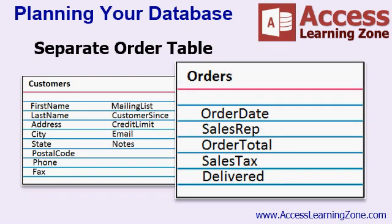Here, that thing is an order. He could have one order, zero orders, or 500 orders — hopefully, right? So you want to put order information in a separate table: the order date, the sales rep, the order total, sales tax collected, and whether or not the order has been delivered. This is just a sample list of fields — you may need many more. This way, you can have an unlimited number of orders per customer. If you put the fields for orders inside the customer table, you're limiting the number of orders each customer can have.